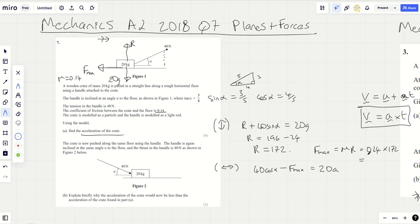Now I can do four fifths of 40 which is eight tenths, which is 32, minus 24.08 equals 20a. I've just got to take that and divide it by 20.